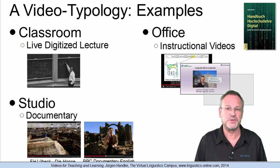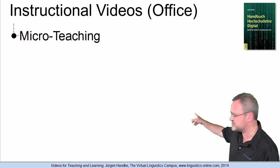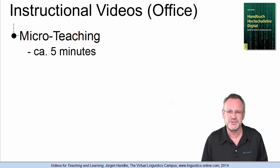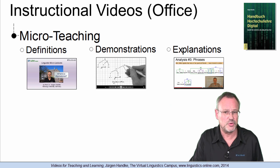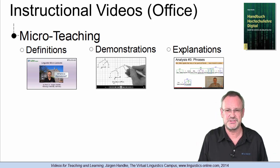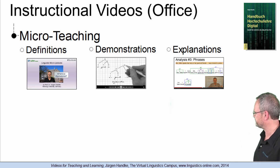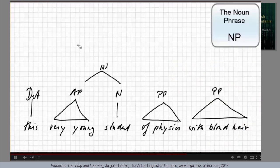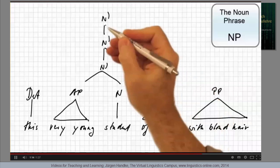Taking the parameter duration, we can distinguish two essential classes of instructional videos. Micro-teaching videos — that is, short videos that are usually not longer than five minutes — primarily involve short and concise explanations. Here are three examples: short video-based definitions, dynamic demonstrations, and concise explanations. Let's look at a typical linguistic demonstration realized as a video scribe: in order to integrate the prepositional phrases into the noun phrase, we have to expand the n-bar node twice more and make them mothers of the two prepositional phrases.